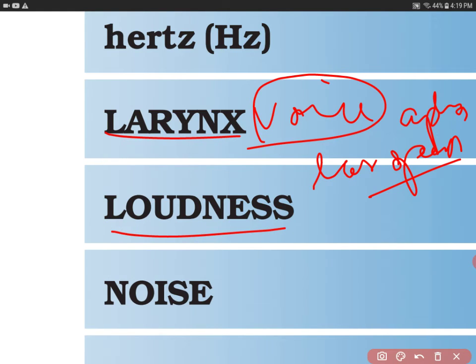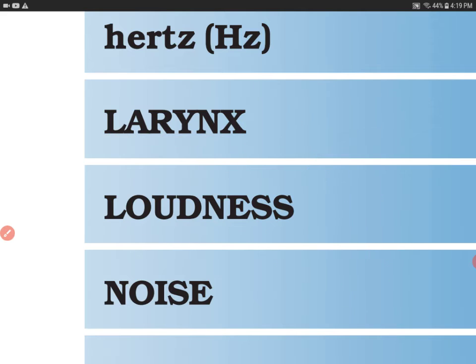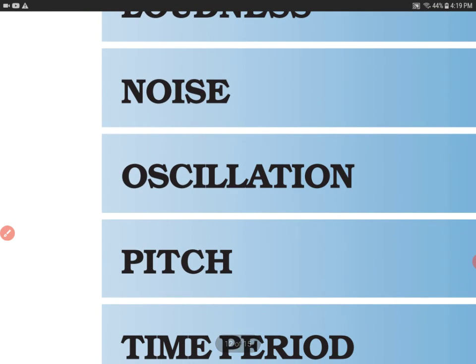The next term is loudness. Loudness depends on amplitude — the greater the amplitude of a vibrating object, the greater the loudness. What is noise? The unpleasant sound is called noise, for example, when many children create a disturbance in class. Oscillation is the to-and-fro motion of an object.